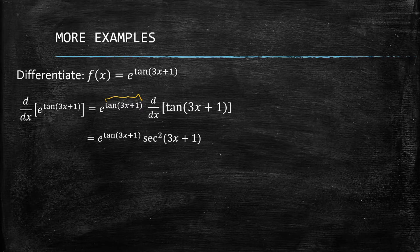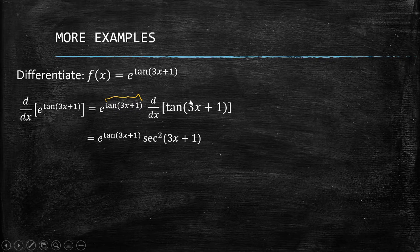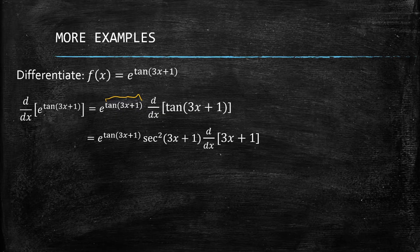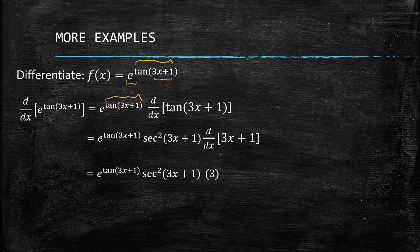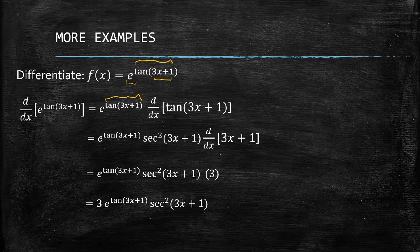The derivative of tangent of (3x + 1) is sec² of (3x + 1). Take note: because we get the derivative of tangent and there is a function within a function, we get the derivative of whatever is inside. So we get the derivative of e, the derivative of tangent, and then the derivative of 3x + 1. That's why it's 3, and we rearrange to get 3·e^(tan(3x+1))·sec²(3x+1).